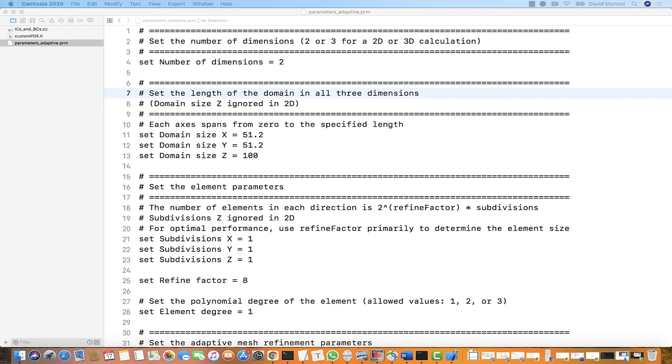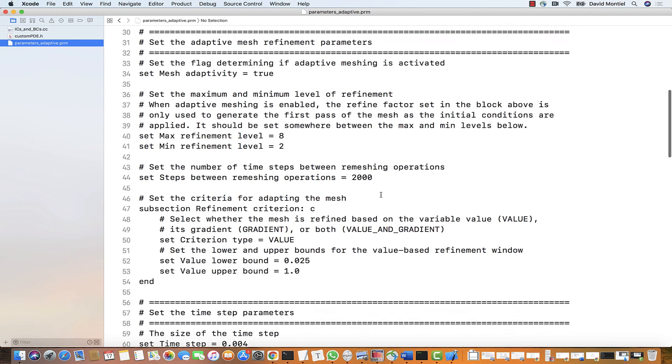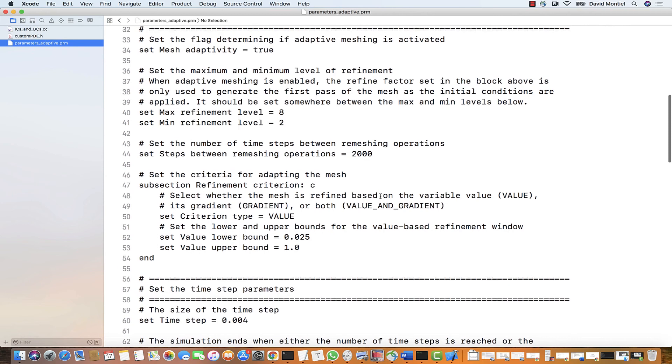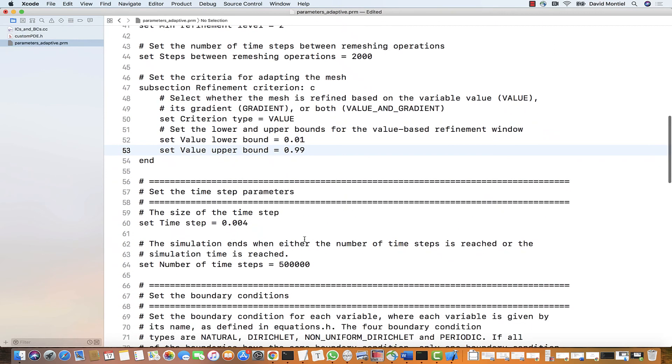The first thing we will change is the bounds for the adaptivity criteria. Since the stable phases in the free energy have concentrations 0 and 1, we want to tell the adaptive method to refine the mesh for values in between but not including the bounds, which will hopefully encompass most of the interface. So let's choose 0.01 as the lower bound and 0.99 as the upper bound.